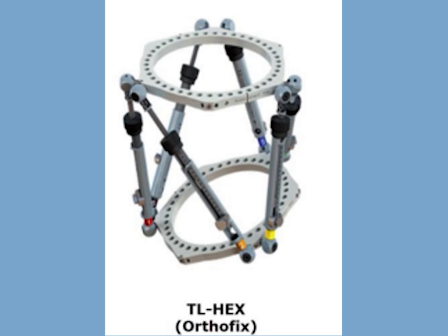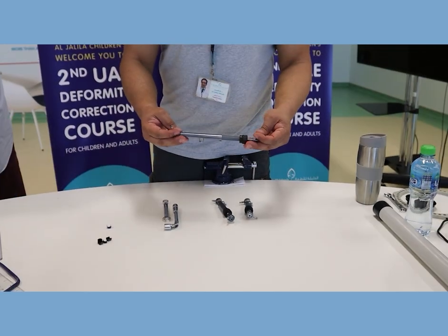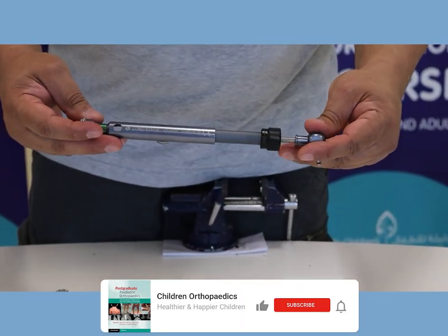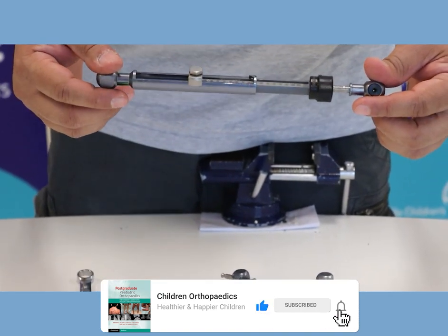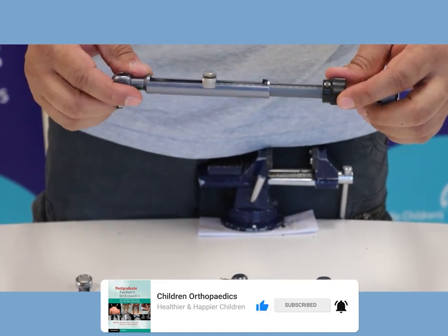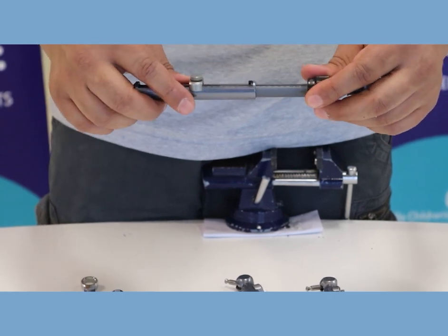TL Hex frame, or indeed any hexapod frame, is made of two rings - one at the top and one at the bottom - and these two rings are connected by what we call struts. Everything is important really to understand the struts. Each hexapod has six struts and they're really different between different companies, and it's really important to understand how they work.